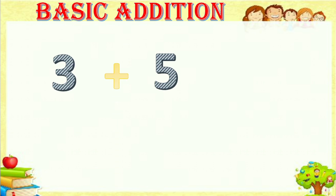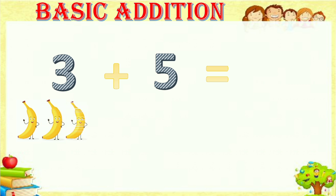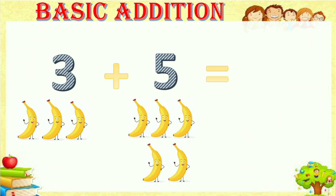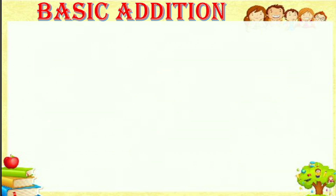Next one is three plus five equals. For three there are one, two, three — three bananas. And for five there are one, two, three, four, five — five bananas. So totally we have to count one, two, three, four, five, six, seven, eight — we have eight bananas.